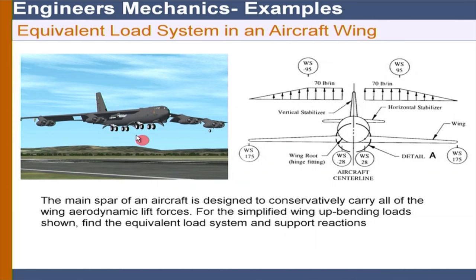In aerospace engineering, the main aerodynamic load is going to be taken by the main spar in the wings. On the conservative side, we can model all the uplift forces and how the spar behaves under the action of the load. A very simplified model assumes the spar is fixed between the fuselage and the wing, and we can calculate what force is transmitted from the spar to the load — that is, we can find the support reactions. These are the types of problems we are going to see.